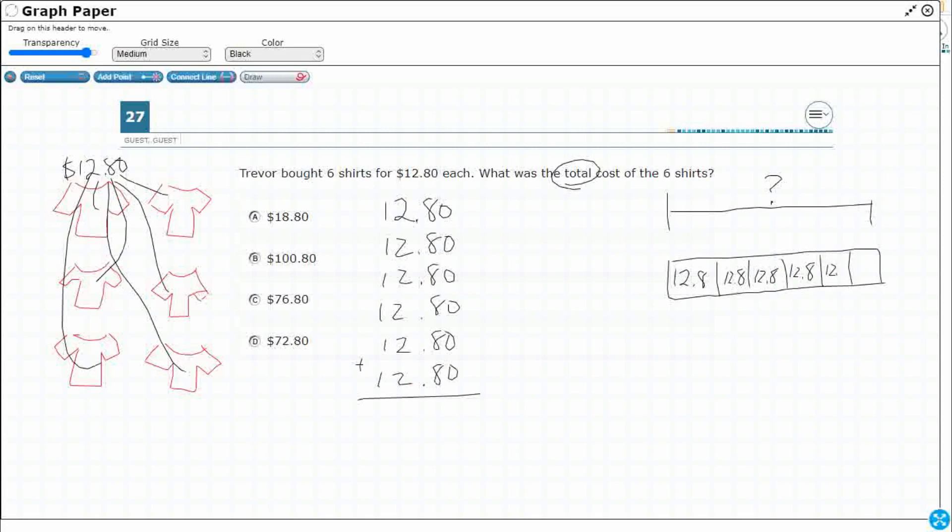So yes, you could do repeated addition, but hopefully at this point you're thinking, oh, equal groups. How many equal groups do you have? Well, I've got six. So six shirts for 12.80 each, each lets us think equal groups. And hopefully by now, you know that when we're thinking equal groups, we should be thinking of either multiplication or division. That's what we do when we're dealing with equal groups.